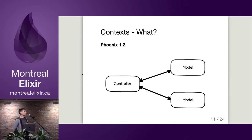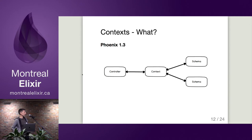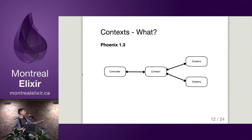Phoenix 1.2 was very straightforward - the controller directly accessed the model, even though it's not an object-oriented design. They got rid of the model terminology for 1.3 and basically added an extra layer in between that corresponds with the concept of bounded context. So instead of going direct to the model, you go through that extra layer, which provides a separation of concerns.